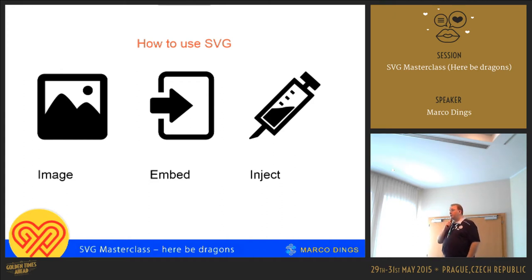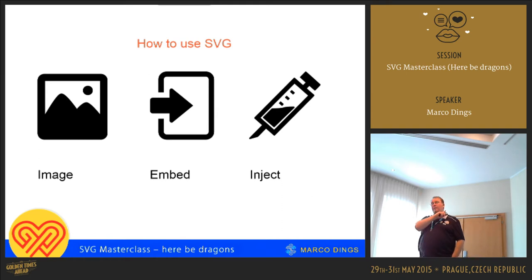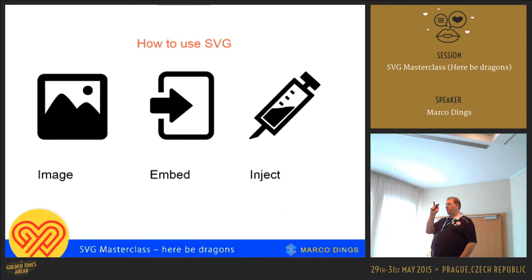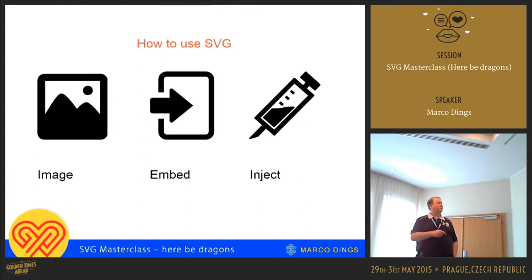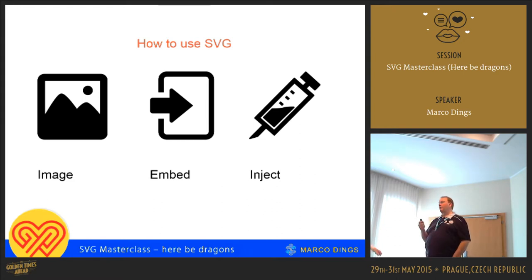How do we use scalable vector graphics? You can use them as an image — just declare an image tag referencing the SVG, and you'll have a basic representation in your web page. That's very basic, and you can't manipulate any of the content of that, because the image is loaded into a shadow DOM and you can't control that.